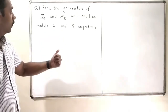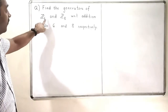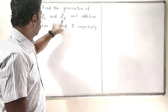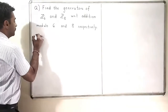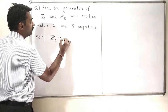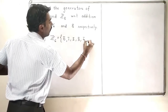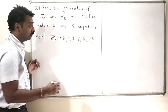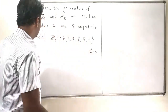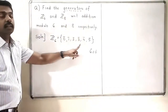The next problem is finding the generators of Z6 and Z8 with respect to addition modulo 6 and modulo 8. Z6 consists of elements 0 bar, 1 bar, 2 bar, 3 bar, 4 bar, and 5 bar, where 6 bar is treated as 0 bar modulo 6. Now we want to find the generators of this set.